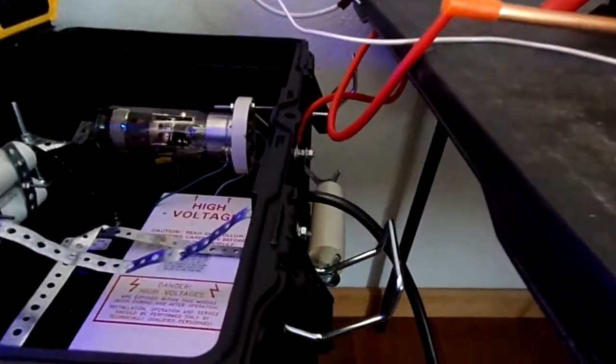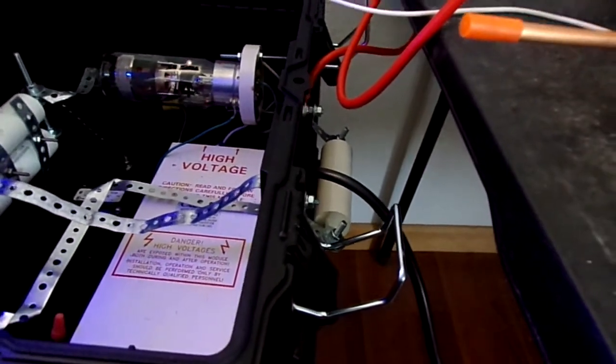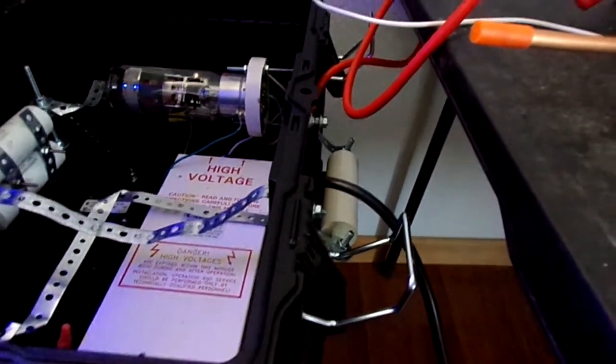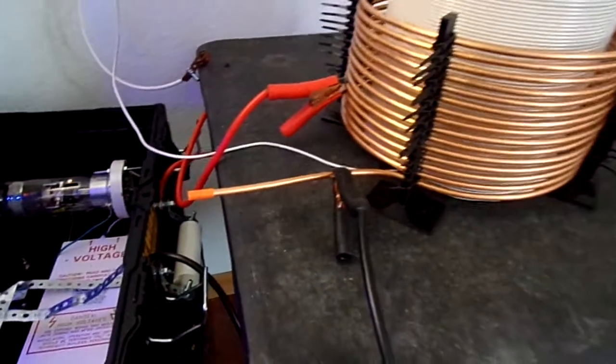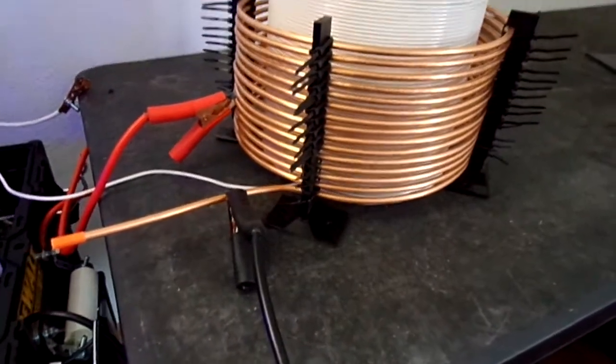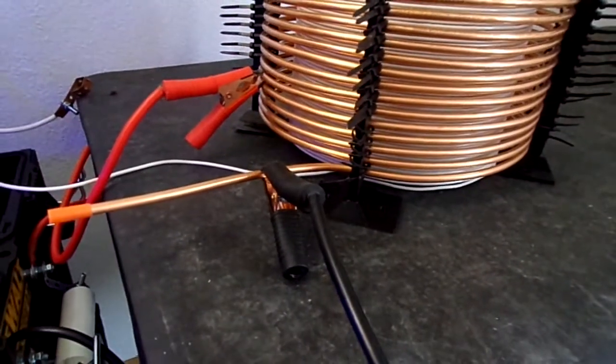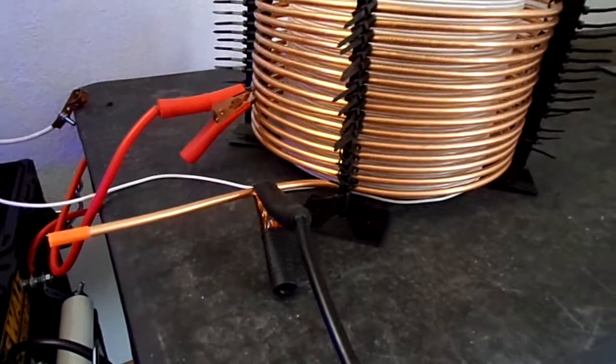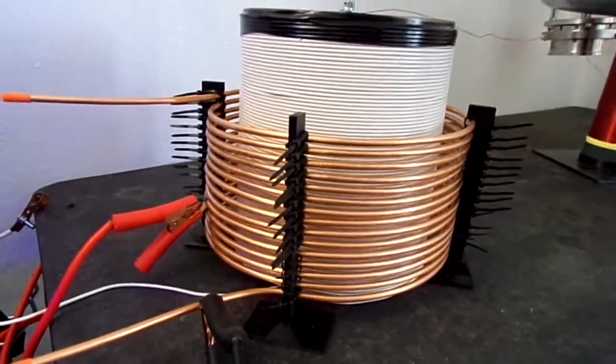There I have a 0.014 microfarad tank capacitor across the leads that come out. And those leads go to the primary. I got it on the fifth turn. This is about 16 microhenries of primary capacitance.